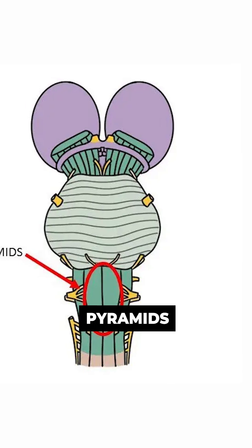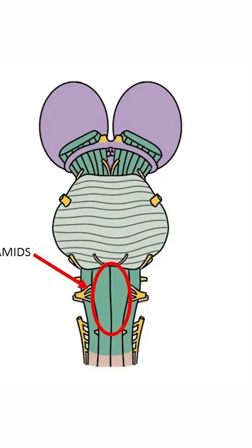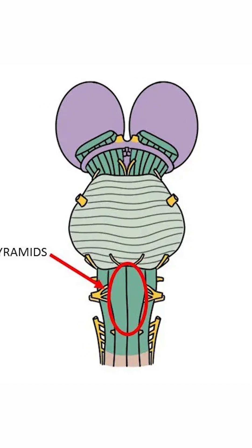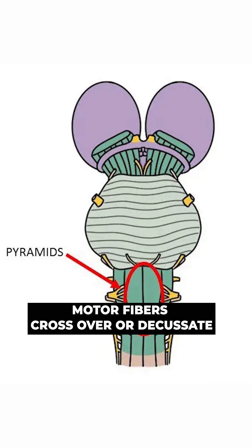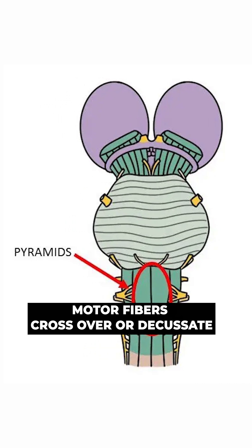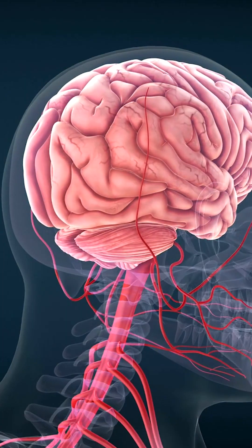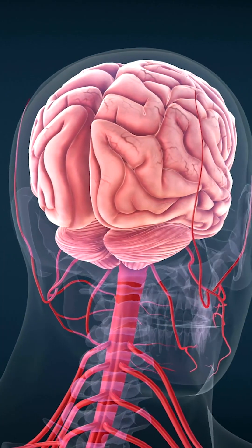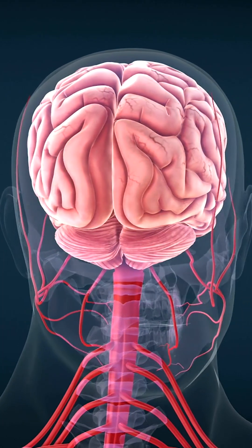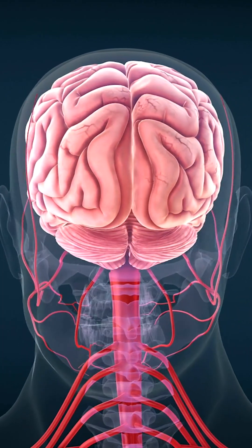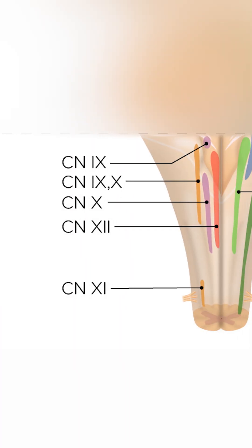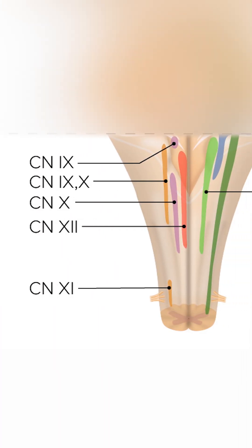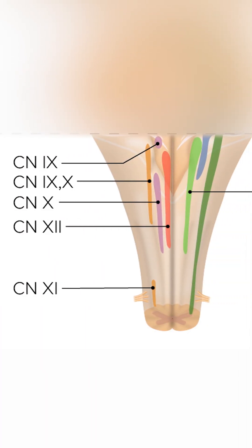The medulla also contains the pyramids, which are two elongated ridges on its anterior surface where motor fibers cross over, or decussate. This decussation is why each hemisphere of the brain controls the opposite side of the body. The medulla also houses nuclei for cranial nerves 8 through 12.